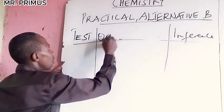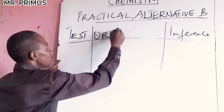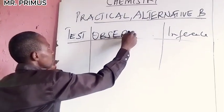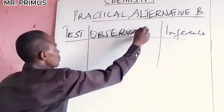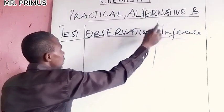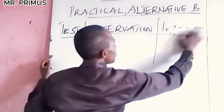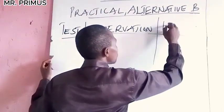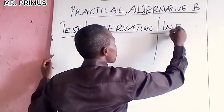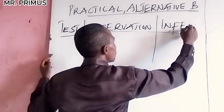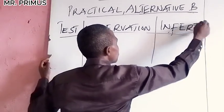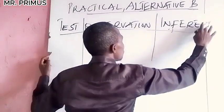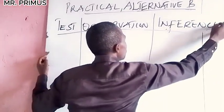So write: TEST, OBSERVATION, INFERENCE — all in capital block letters. This is just the first thing. Test, observation, inference.